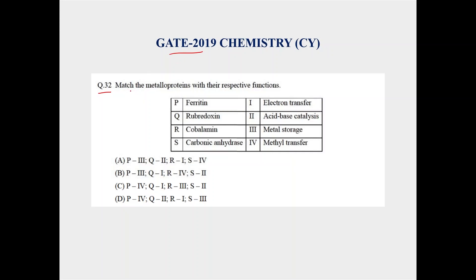The question is match the metalloproteins with their respective functions. The metalloproteins given are ferritin, rubridoxin, cobalamin and carbonic anhydrase, and the functions given are electron transfer, acid-base catalysis, metal storage and methyl transfer.